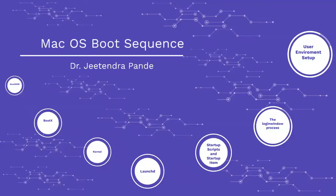Mac OS boot sequence: the boot process starts with the activation of boot ROM, the basic Macintosh ROM, which performs a power-on self test to test hardware essential to startup. On the passing of this test, the startup chime is played and control of the computer is passed to open firmware.